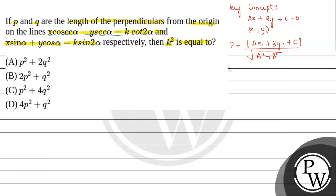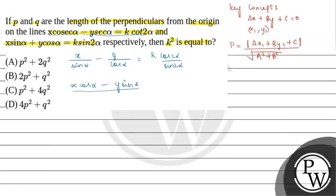Now let us use the key concept and solve the problem. We can rewrite the first equation as X by sin alpha minus Y by cos alpha, since cosecant alpha equals 1 by sin alpha and secant alpha equals 1 by cos alpha, equals K cos 2 alpha. Taking LCM, we get X cos alpha minus Y sin alpha divided by sin alpha cos alpha equals K cos 2 alpha divided by 2 sin alpha cos alpha, since sin 2 alpha equals 2 sin alpha cos alpha.